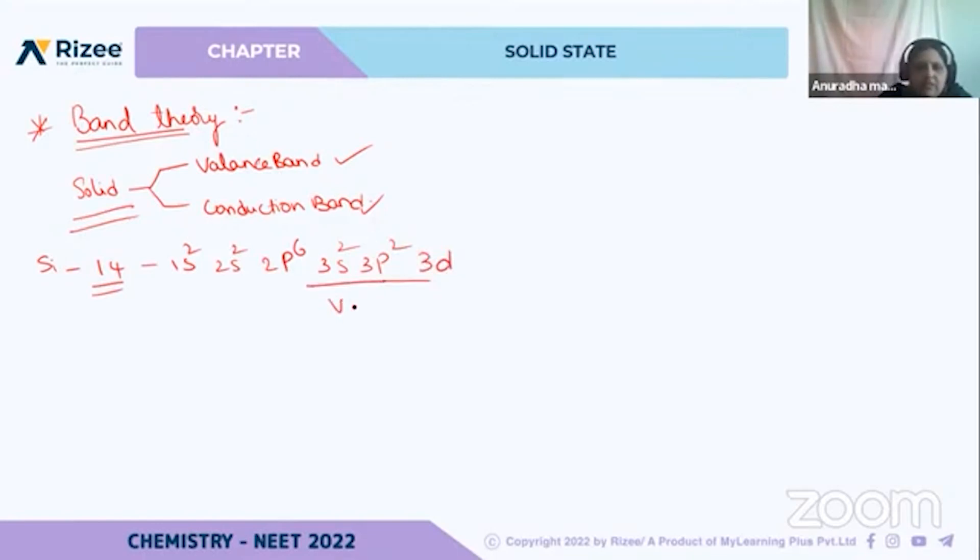This is our valence shell. Some of the orbitals are not filled. Some are empty, not completely filled. Some are filled and some are empty. Not completely filled, but these orbitals are completely filled. These are having obviously more weight when compared to this one.